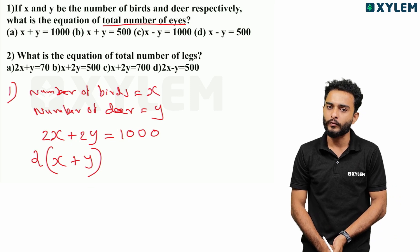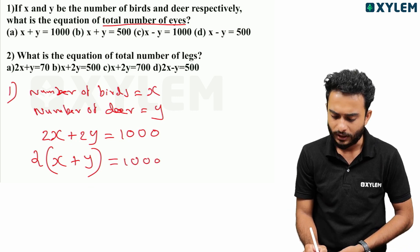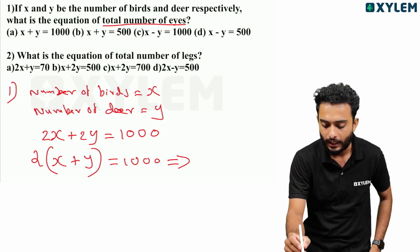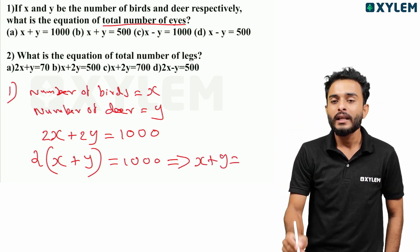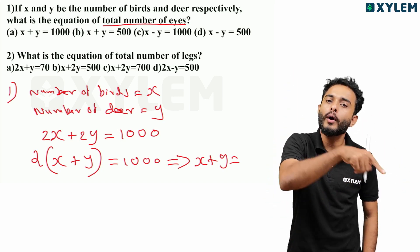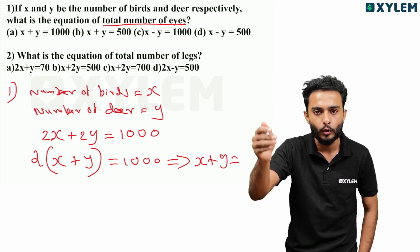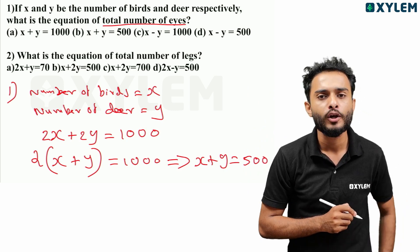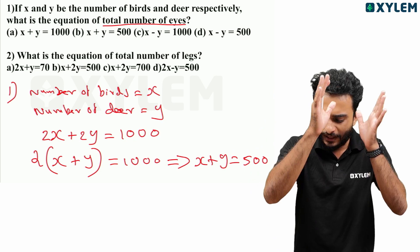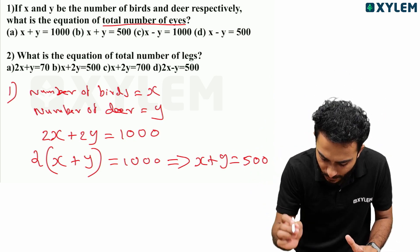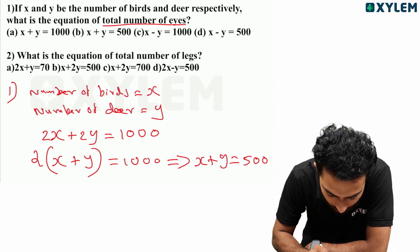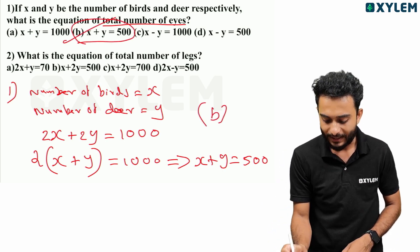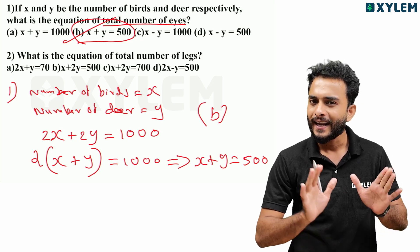We can simplify 2x plus 2y equals 1,000 by dividing both sides by 2: that gives us 2 into (x plus y) equals 1,000, so x plus y equals 500. That is the answer — x plus y equal to 500.